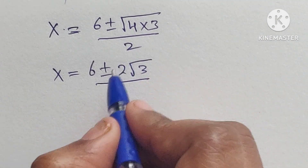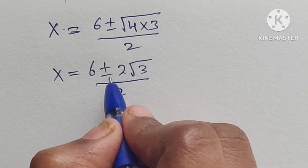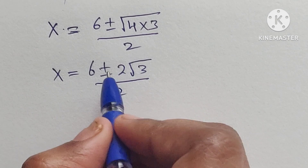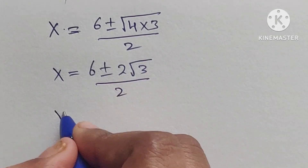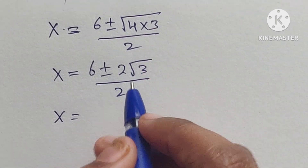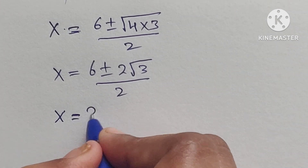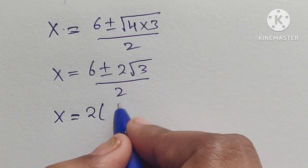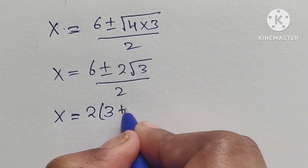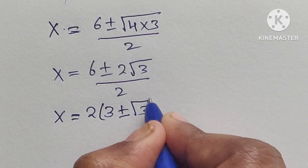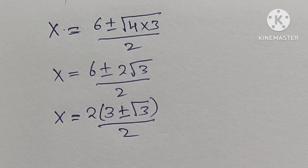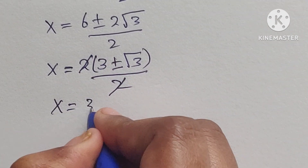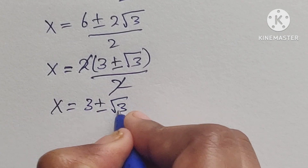In the numerator we can take out the common factor of 2. So 6 plus or minus 2 root 3 divided by 2 — taking out 2 as common gives 2 times (3 plus or minus square root of 3), divided by 2. The 2s cancel, giving x equals 3 plus or minus square root of 3.